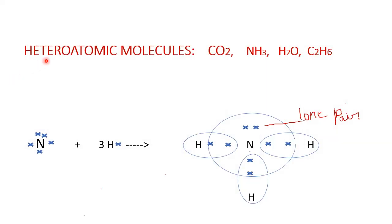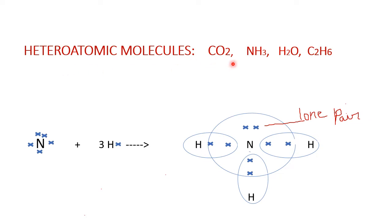Some more examples of heteroatomic molecules: Carbon dioxide — two different atoms, carbon atom and oxygen atom. Ammonia NH3 — nitrogen and hydrogen atoms. Water — hydrogen and oxygen. Ethane C2H6 — carbon and hydrogen atoms. In all these four examples, the atoms are different types in a molecule and hence these are examples of heteroatomic molecules.